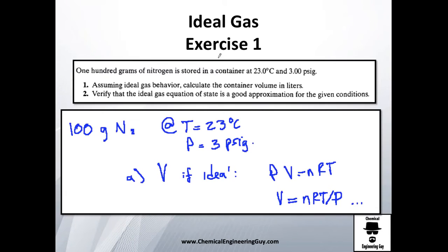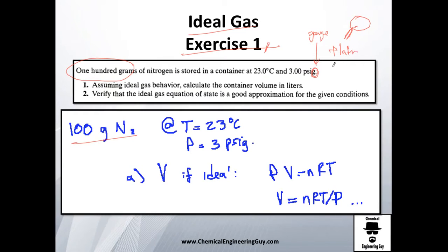Let's do this quick example — ideal gas exercise number one. They tell you 100 grams of nitrogen is stored in a container at a given temperature and pressure. The 'G' in the pressure unit means gauge pressure, read from equipment, so you need to add one atmosphere or 14.7 psi to get the total absolute value. Assume ideal gas behavior and calculate the container volume in liters.